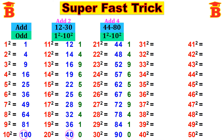Therefore: 21 squared is 441, 22 squared is 484, 23 squared is 529, 24 squared is 576, 25 squared is 625, 26 squared is 676, 27 squared is 729, 28 squared is 784, 29 squared is 841, and 30 squared is 900.